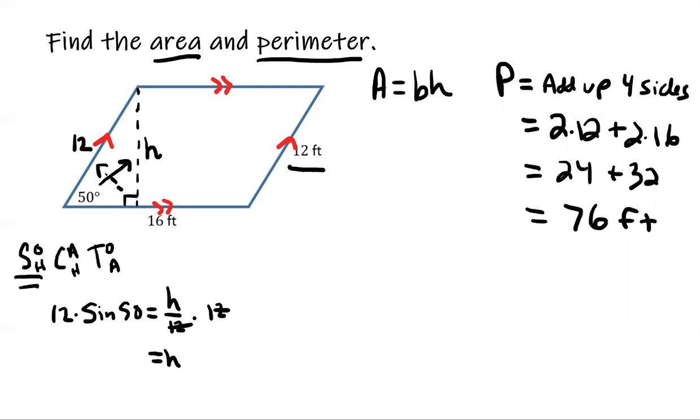I'm getting 9.19. So what happens is this just turns into 9.19, and that's my height at 9.19. It's approximate. Actually, that's in feet.